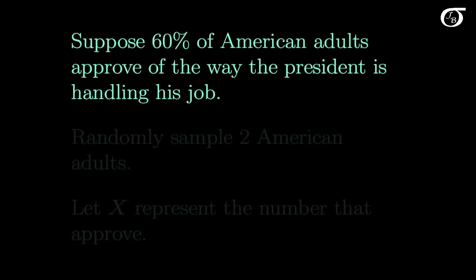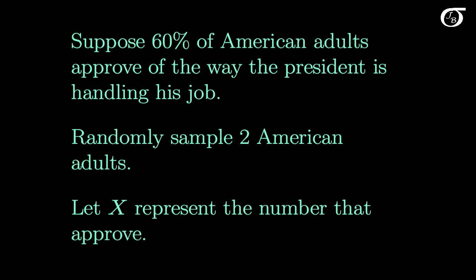Let's do an example of some of these calculations. Suppose that 60% of American adults approve of the way the president is handling his job, and we randomly sample two American adults. We let the random variable X represent the number of those adults that approve. So X can take on the values 0, 1, or 2. We can calculate the probabilities from the idea that 60% of American adults approve and we are randomly and independently sampling two adults. I show how to go through those calculations in my introduction to discrete random variables video.